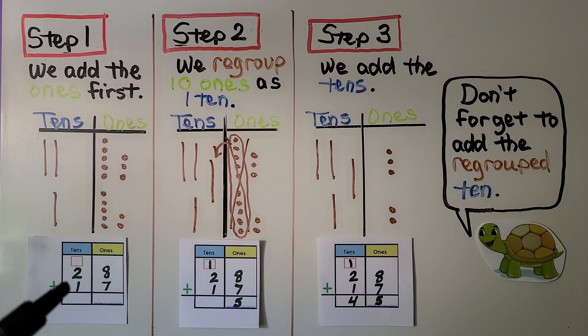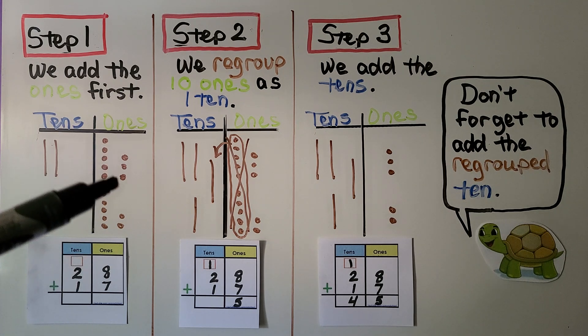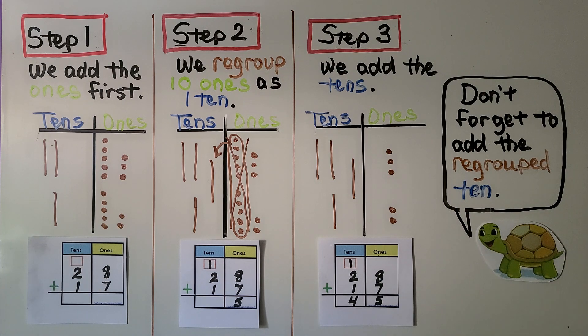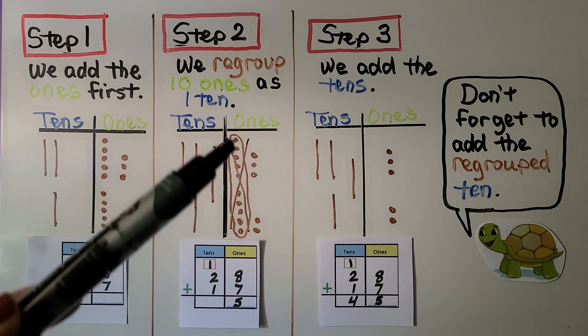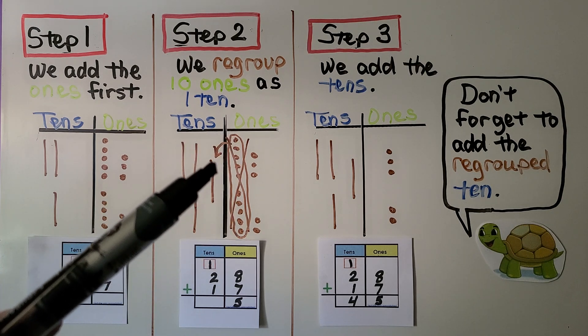So for 28 plus 17, we add the ones first. We have an 8 plus 7. We can model it with 8 ones and 7 ones. 8 plus 7 is 15. For the second step, because we have a 15, that's 1 5 10 ones, we can circle in our model ten ones and regroup them as a ten.